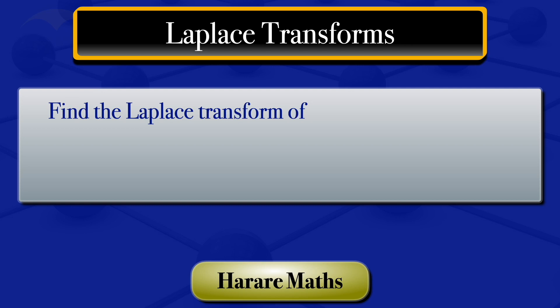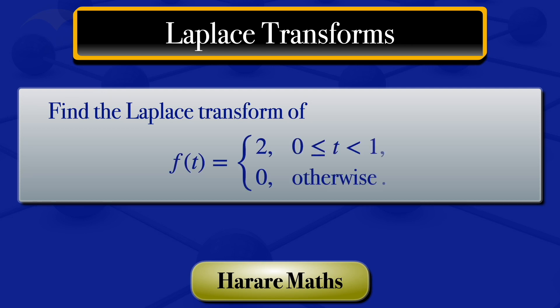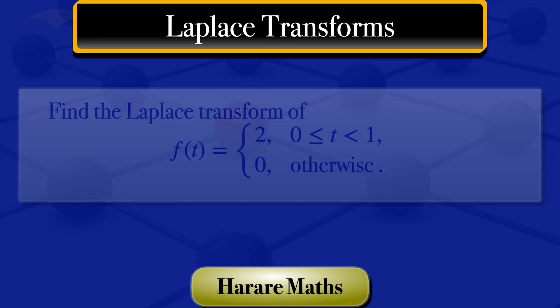In this tutorial, we are going to find the Laplace transform of f of t, which is equal to 2 for t greater than or equal to 0 but less than 1, and 0 otherwise.